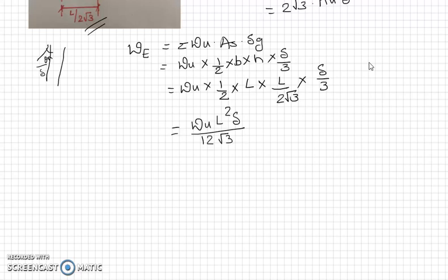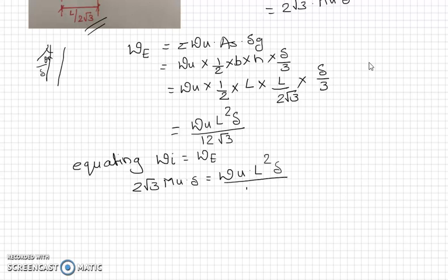Now equating both, as we follow the virtual work method, equating the internal work done to external work done: internal work done was 2 root 3 mu into delta, and external work done is wu L square delta upon 12 root 3.